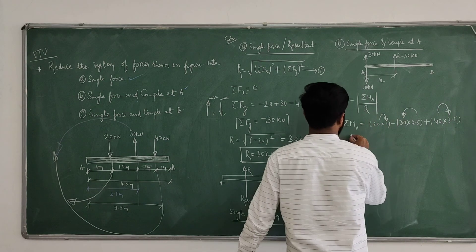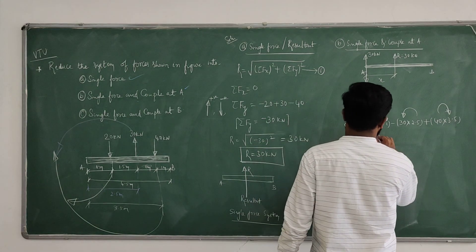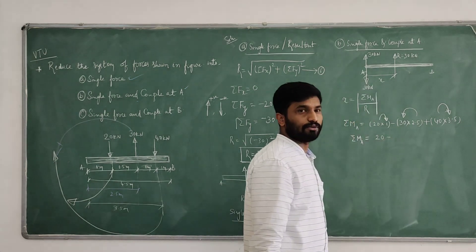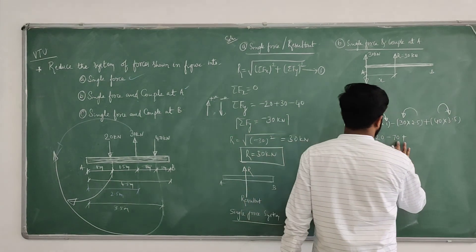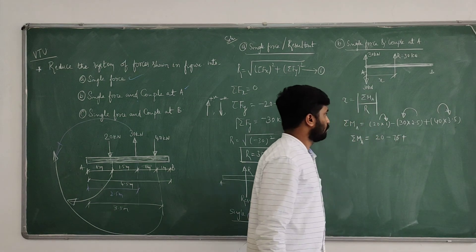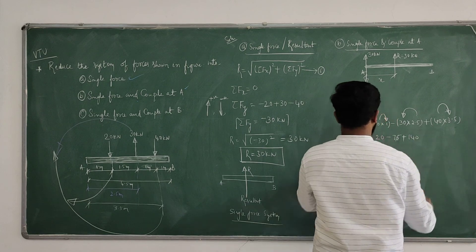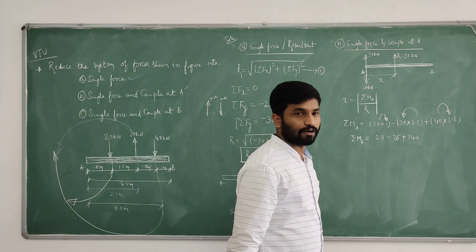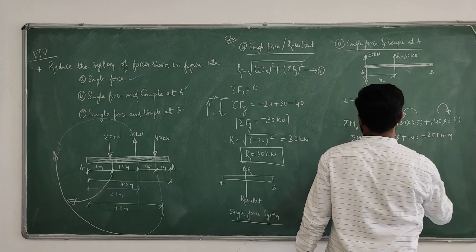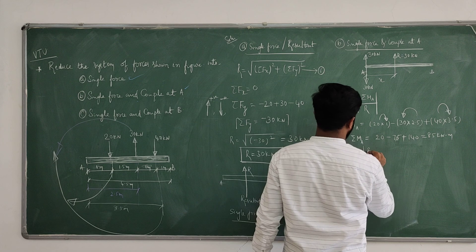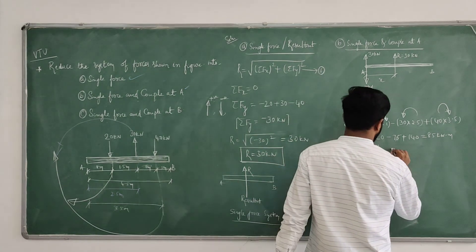Computing σMA: 20 into 1 equals 20, plus 40 into 3.5 equals 140, minus 30 into 2.5 equals 75. So σMA equals 20 plus 140 minus 75 equals 85 kilonewton-meters. Therefore, x equals σMA divided by R equals 85 divided by 30 equals 2.83 meters.